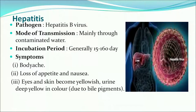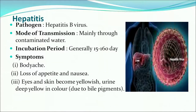The next disease is hepatitis. Its pathogen is Hepatitis B virus. Mode of transmission is mainly through contaminated water, and its incubation period is very long, varying from 15 to 160 days. Symptoms include body ache, loss of appetite and nausea, eyes and skin becoming yellowish, urine deep yellow in color, and an enlarged liver. Prevention includes vaccination, proper hygiene, and taking very simple food during the disease.